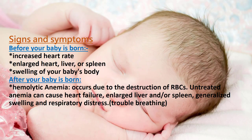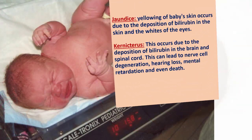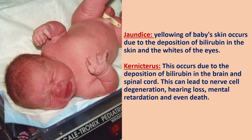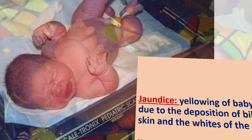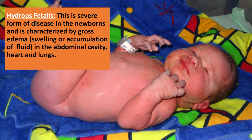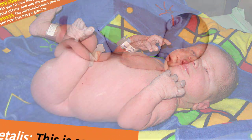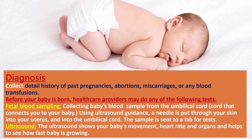Signs and Symptoms: Before your baby is born, there will be increased heart rate, enlarged heart, liver or spleen, and swelling of the baby's body. After your baby is born, hemolytic anemia occurs due to the destruction of RBCs. Jaundice — yellowing of the baby's skin — occurs due to deposition of bilirubin in the skin. Kernicterus occurs due to deposition of bilirubin in the brain and spinal cord. Hydrops fetalis is a severe form of disease in the newborn, characterized by gross edema in the abdominal cavity, heart, and lungs.